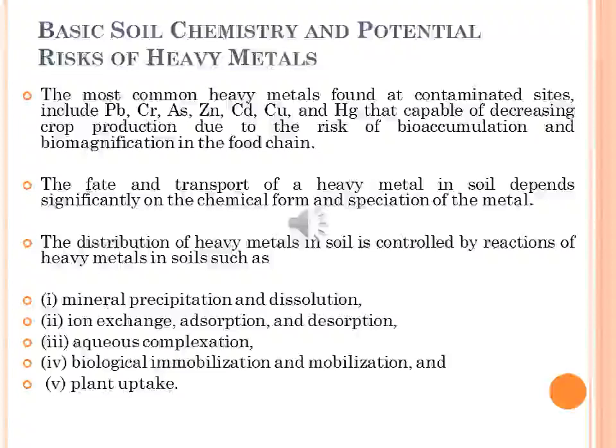The fate and transport of heavy metals in soil depends on their chemical form and speciation. Once in the soil, heavy metals are absorbed by initial fast reactions taking place in minutes or hours, followed by slow adsorption reactions taking days or years. They are redistributed into different chemical forms with varying bioavailability, mobility and toxicity. This distribution is controlled by reactions such as mineral precipitation, dissolution, ion exchange, adsorption, desorption, aqueous complexation, biological immobilization, mobilization and plant uptake.